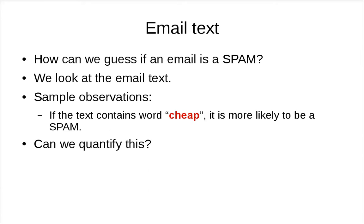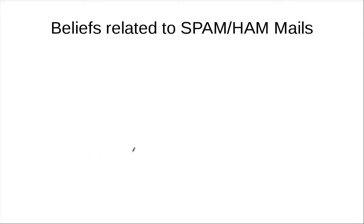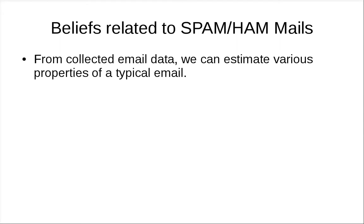So how can we guess if an email is spam or not? For us humans, we just look at the email text and make a few simple observations. If we see words like 'cheap' or 'extremely cheap' or something that looks like an advertisement, we think it is spam. Can we quantify this? We want to write a program that classifies emails into spam and ham.